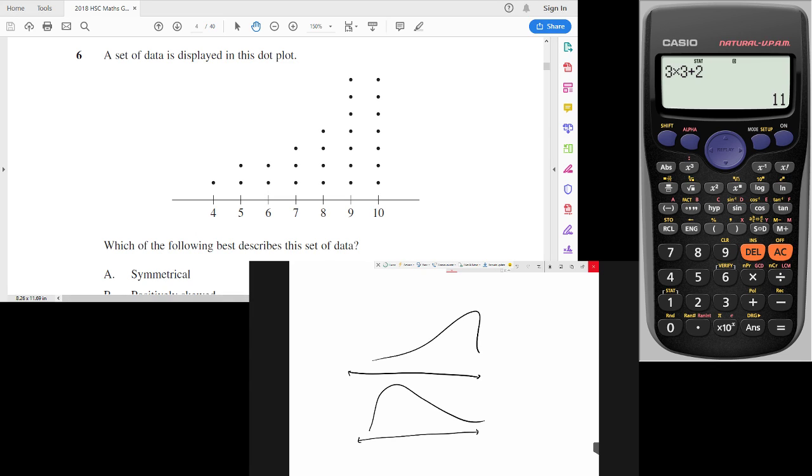So when we have negatively skewed data, what we say is that more of the values are to the right, that is that the tail is hanging towards the negative end. So this tail here is towards the lower half of the data.